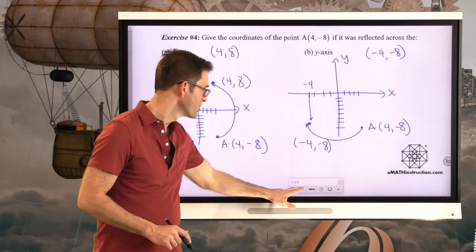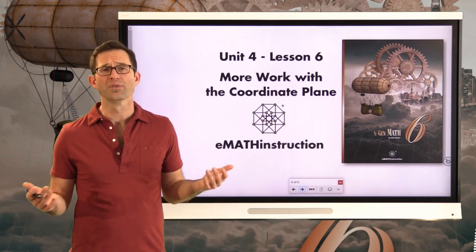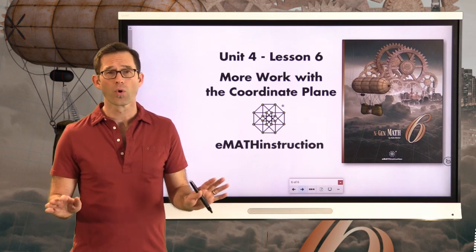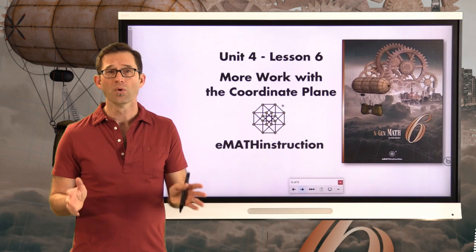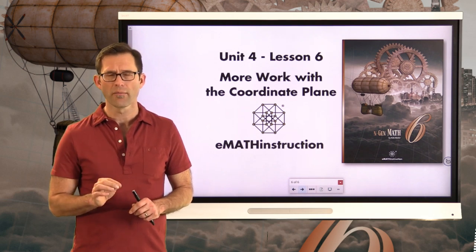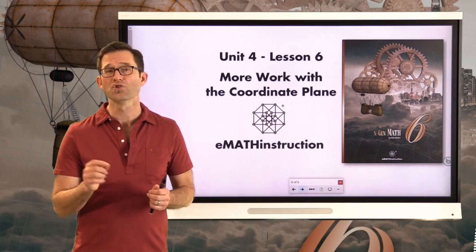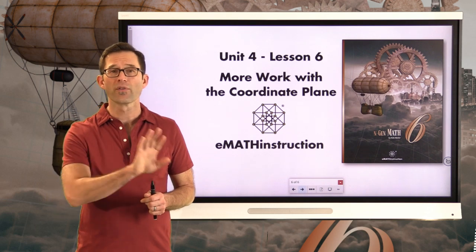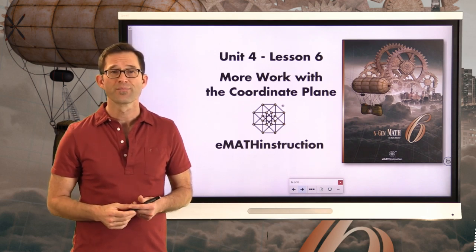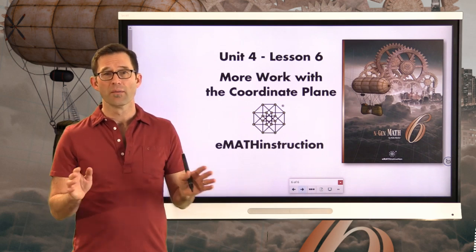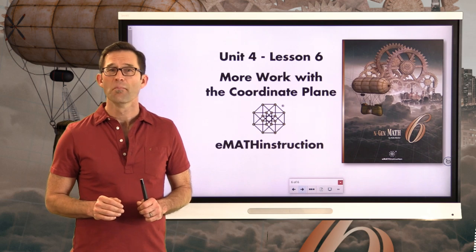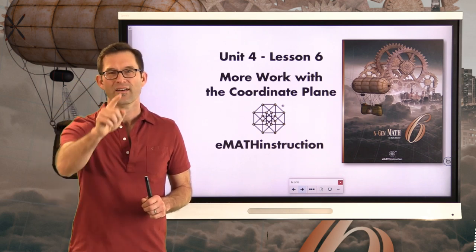Today we covered two distinct ideas. First, the quadrants: the x and y-axes crossing at the origin divide the coordinate plane into four quadrants, with quadrant one being most important — both x and y are positive there. The other three quadrant locations need to be memorized. Second, changing the sign of either coordinate reflects or flips a point across the corresponding axis — changing x reflects across the y-axis; changing y reflects across the x-axis. We'll work more with these in Math 7 and Math 8. Thank you for joining me for another NGen Math 6 lesson by eMath Instruction. My name is Kirk Weiler — keep thinking and keep solving problems.